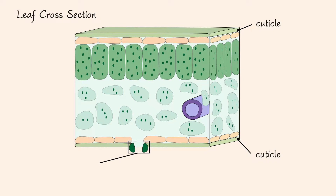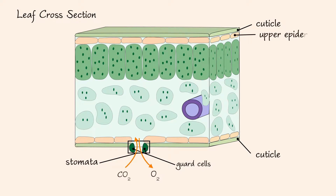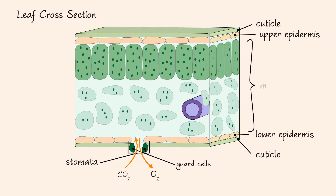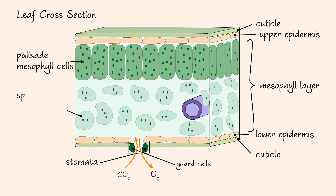Along the bottom surface of the plant leaf are stomata. Each stoma consists of two guard cells. Stomata are the sites of gas exchange — oxygen exits and carbon dioxide enters. The upper and lower epidermises are the outermost cell layers of the leaf and provide a protective barrier. Between the upper and lower epidermis is the mesophyll layer.